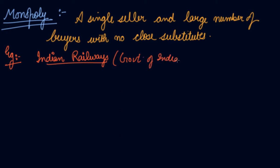Only the railways in India are a monopoly industry of the Government of India. So it is the wish of the government what they want to charge for the ticket of Indian railways. Since there is only one producer of a product in the market, the distinction between the firm and industry disappears.